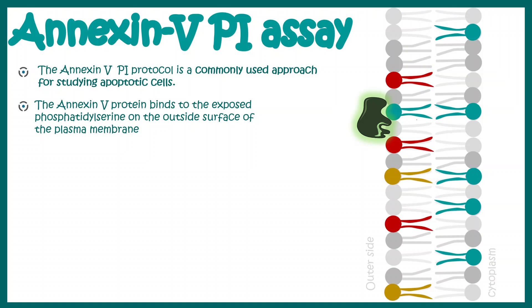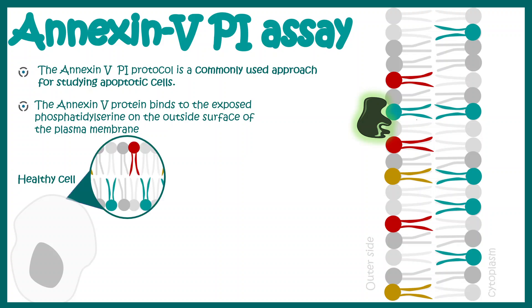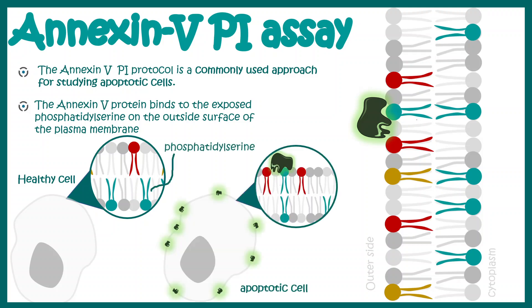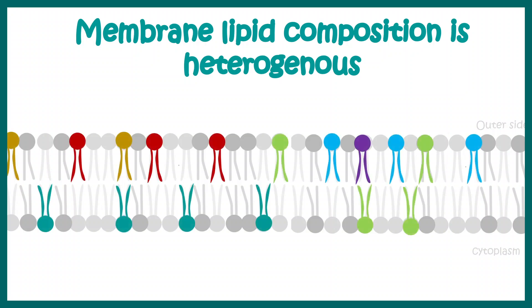The Annexin-5 protein can bind to phosphatidylserine residues on the membrane with high affinity. In normal cells, phosphatidylserine is generally not found on the outer leaflet — it is generally distributed in the inner leaflet. So in a normal cell, phosphatidylserine would never come in contact with Annexin-5, which is on the outer side. Annexin-5 can interact with phosphatidylserine in an apoptotic cell only.